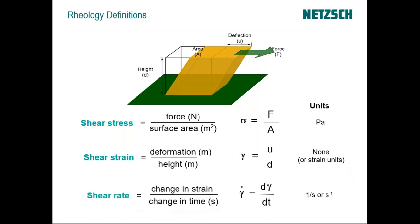If the sample is a liquid, instead of just deforming and stopping it continues to flow, giving a change in strain every second. For example, if the sample deforms half of its height every second — say one millimeter gap moves half a millimeter — the strain is 0.5. Divided by one second, we get a shear strain rate of 0.5 reciprocal seconds. The units are one-over-seconds (s⁻¹), representing the number of strains experienced per second. The symbol is gamma-dot, or dγ/dt. Shear rate is a good way of describing flow behavior because it accounts for the gap.